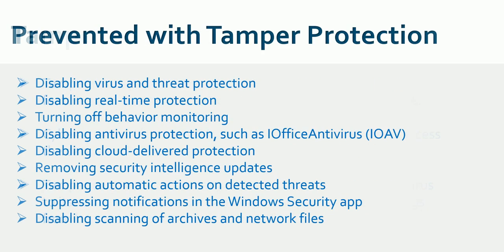What is prevented with tamper protection? It protects against disabling antivirus and threat protection, disabling real-time protection, turning off behavior monitoring, disabling antivirus protection such as IOAV (I/O AV), disabling cloud delivery protection, and removing security intelligence. These are the features protected by tamper protection.